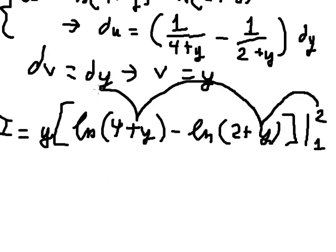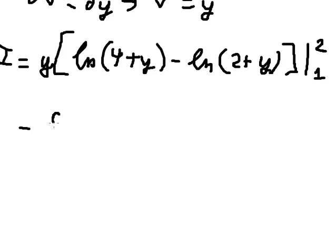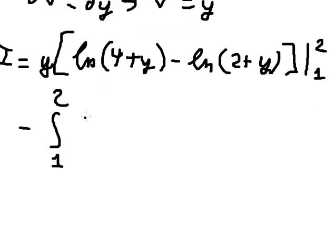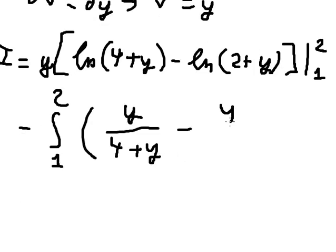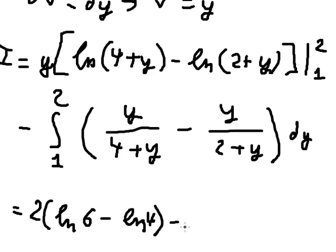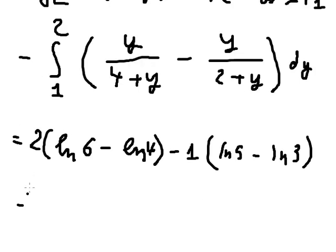And then I will put the bounds from number one to number two. So I will put number two here and number one here. And we have du multiplied by v. That should give us: number two times ln of number six, minus ln of number four, minus number one times ln of number five, minus ln of number three.